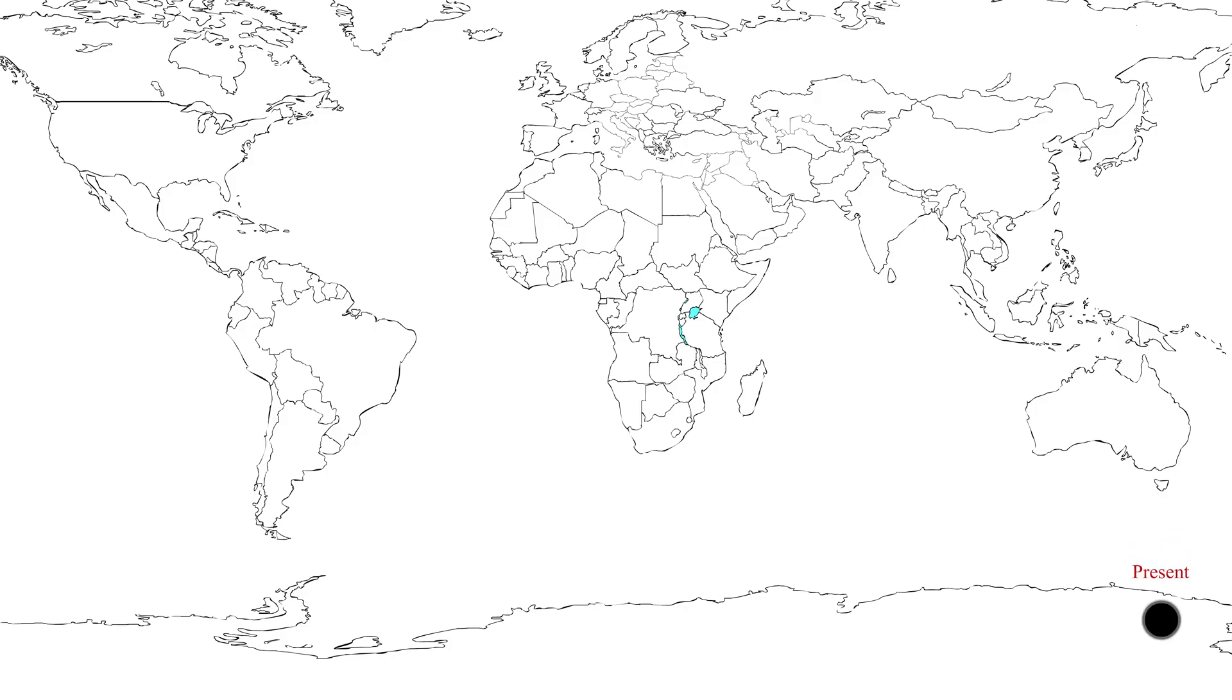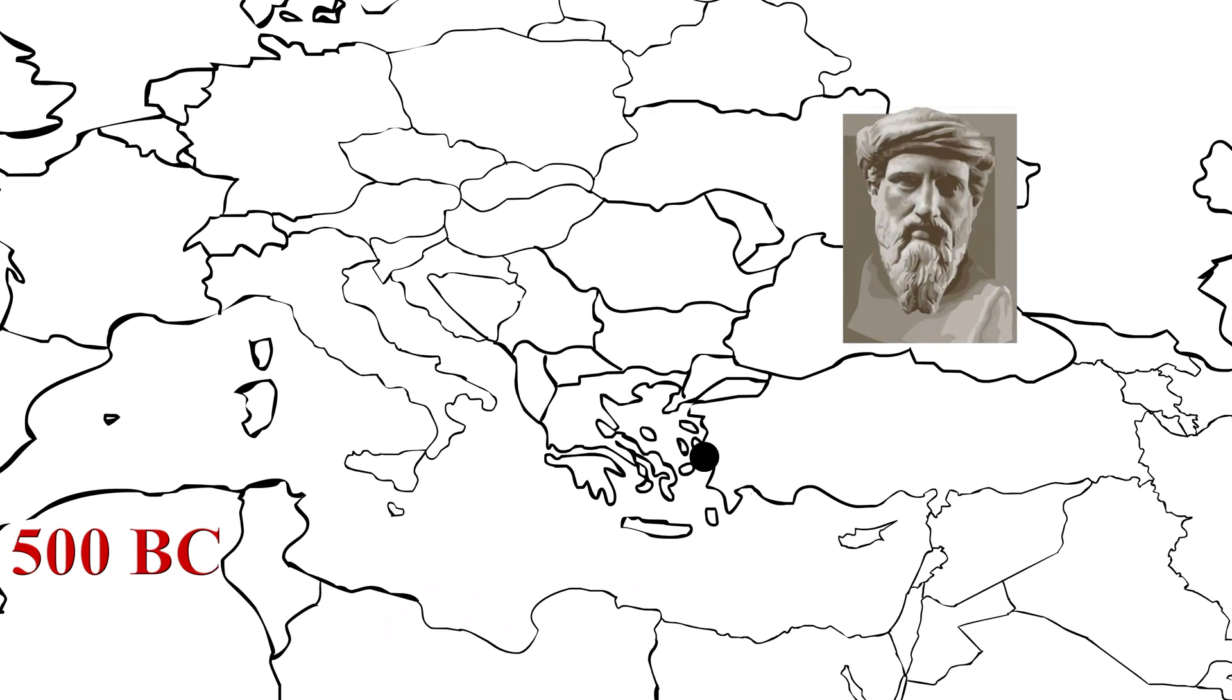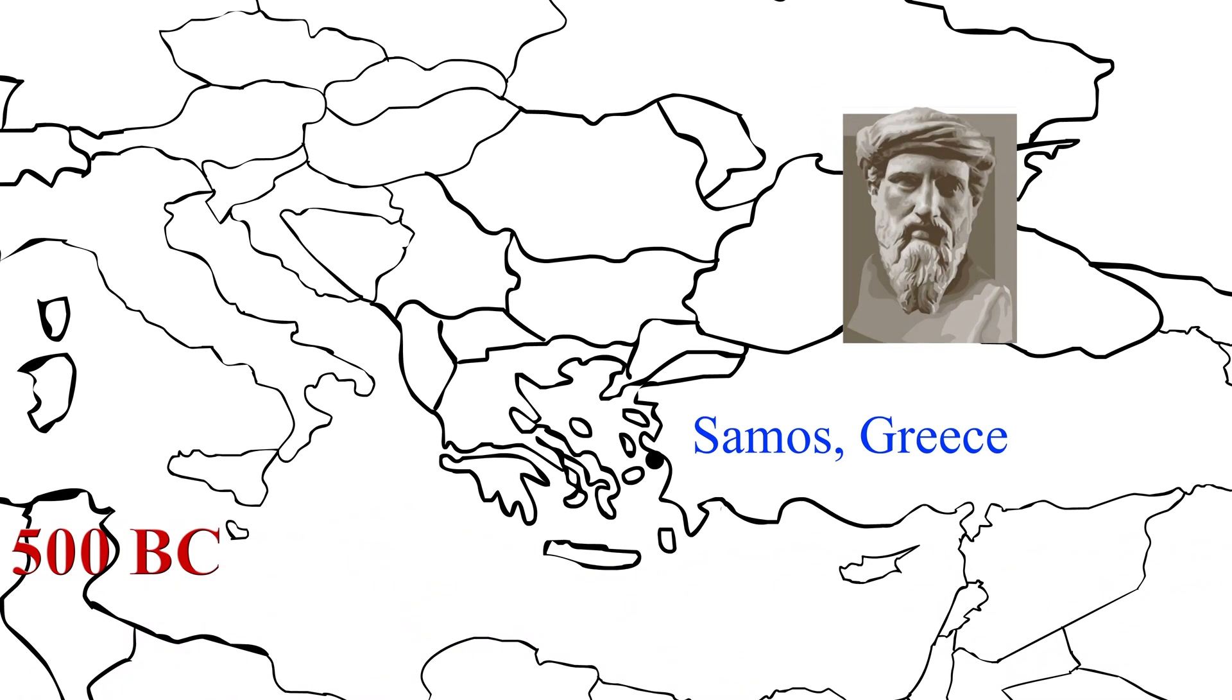Pythagoras was born around 500 BC in Samos, Greece. Back then math consisted mainly of geometry, which is the study of shapes.